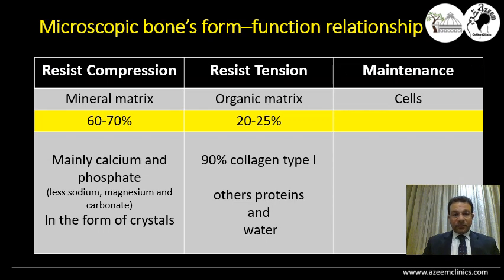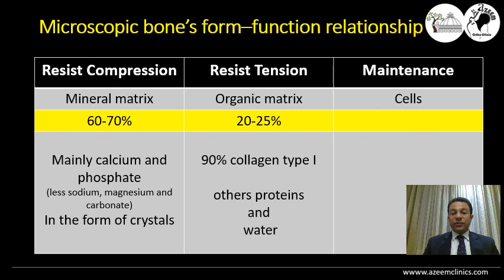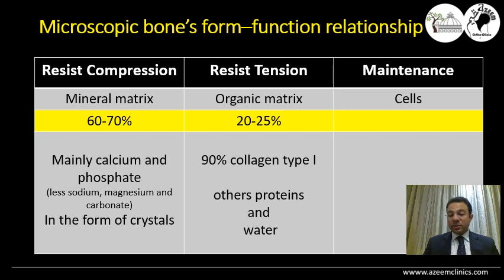Microscopically, bone is formed of a mineral matrix — the inorganic matrix — constituting about 70% of the bone material, in the form of calcium phosphate crystals. This mineral matrix is there to antagonize compression forces. About 25% is formed of organic or protein matrix, of which 90% is collagen type 1 material, which is there to resist tensile forces.